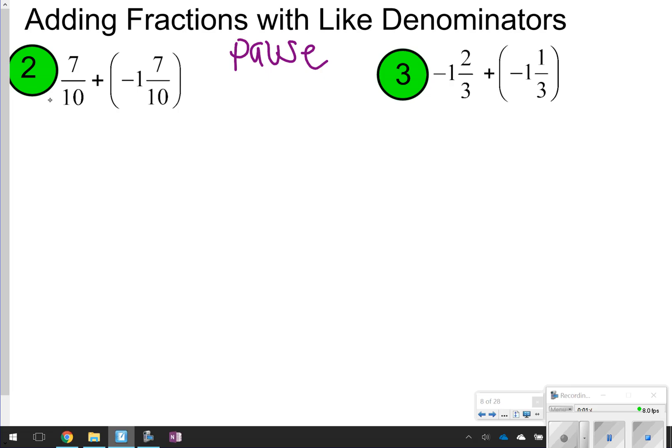Number two, it looks like we have different signs. Remember, different signs, subtract. When you're subtracting, you're going to subtract the fractions first. So we have seven-tenths minus seven-tenths. That's going to give us zero, so all that's left is that negative one. So negative one should be our answer for number two.